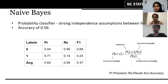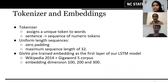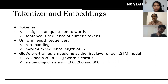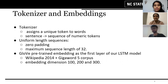For a better representation, I'm going to move on to Roshni and Meenakshi, who'll tell you about the BERT and LSTM models. We use tokenizer and embeddings to facilitate the LSTM model. We use the Keras tokenizer, which assigns a unique token to each word present in the training dataset and converts every sentence to a sequence of numeric tokens.